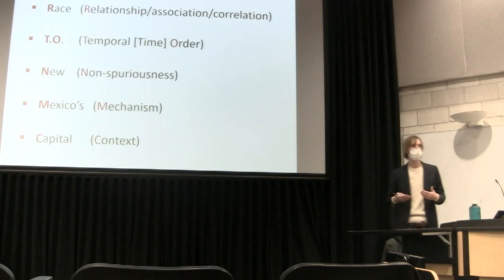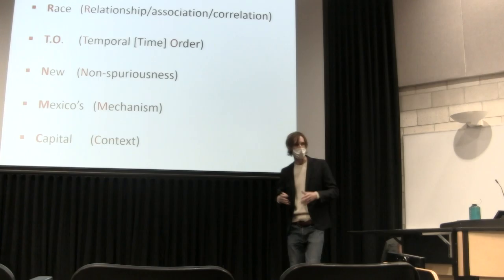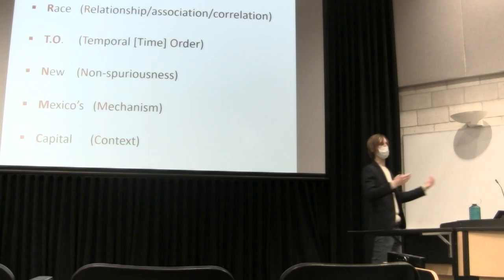So the first one — 'race' — that corresponds to relationship, association, correlation. All those words being the same thing. Two is temporal order. Temporal is just a fancy word for time, so: time order.